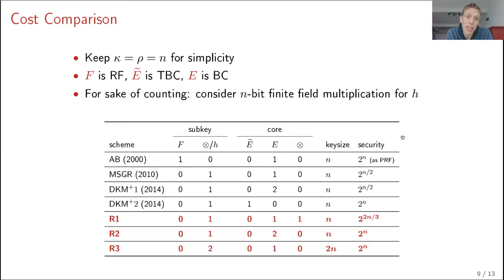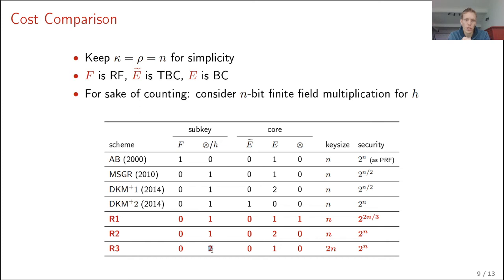For comparison, take kappa equal to rho equal to n. F denotes a random function, tilde-E a tweakable block cipher, and E a block cipher. Assuming the universal hash function costs 1 finite field multiplication, the cost is split into subkey cost (needing strong DPA protection) and core cost (needing weak SPA protection). Notably, R2 and DKM+1 are equally expensive in both subkey and core, with equally high state, but R2 achieves optimal security.